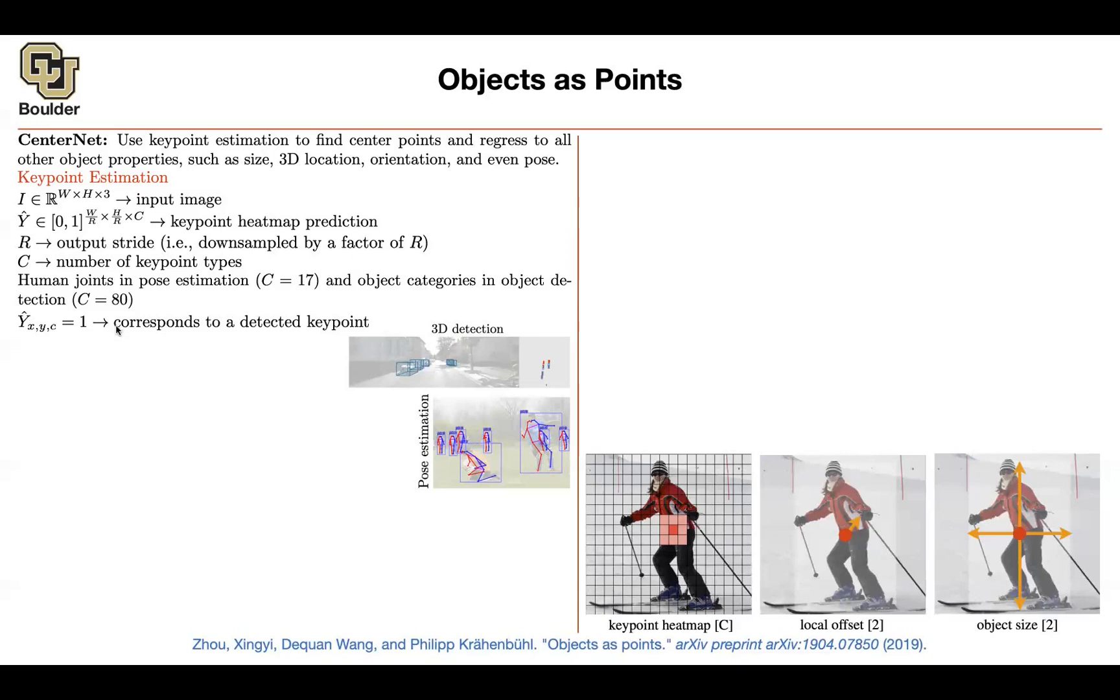So how do you interpret this prediction? Whenever it is close to 1, you know that that pixel is going to correspond to a detected key point. And which detected key point? What class does it belong to? It's where you have your C. That's going to be the type of the key point.